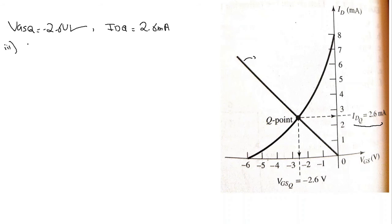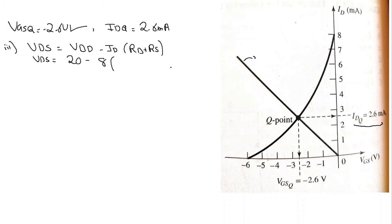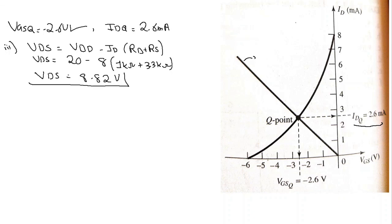Next, we find VDS. VDS = VDD - ID(RD + RS). Substituting values: VDD = 20 V, ID = 2.6 mA, RD = 1 kΩ, and RS = 3.3 kΩ. This gives VDS = 8.82 volts.